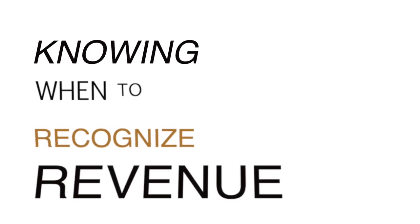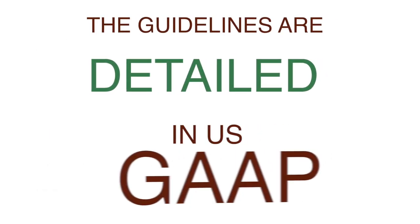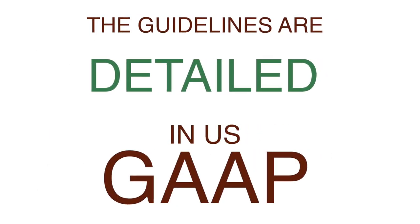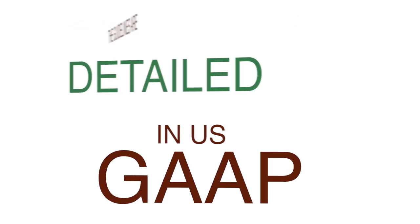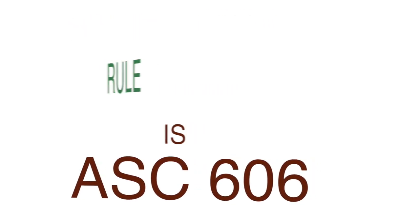Knowing when to recognize revenue is one of the reasons we have generally accepted accounting principles. GAAP has detailed rules for when and how to recognize revenue and how to report it on the income statement. The most recent of these rules is ASC 606, or Accounting Standards Codification 606.